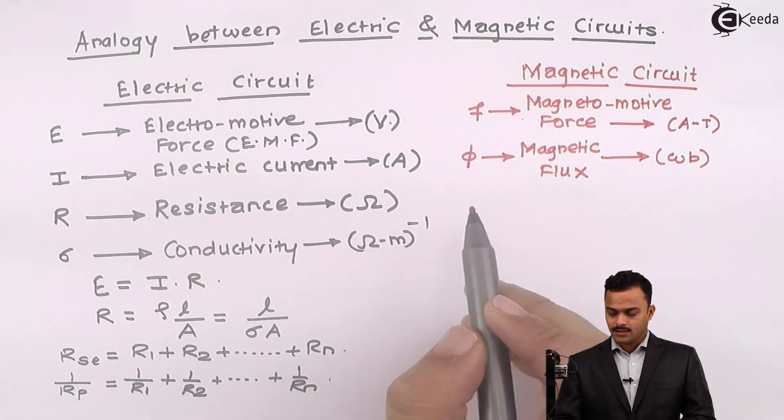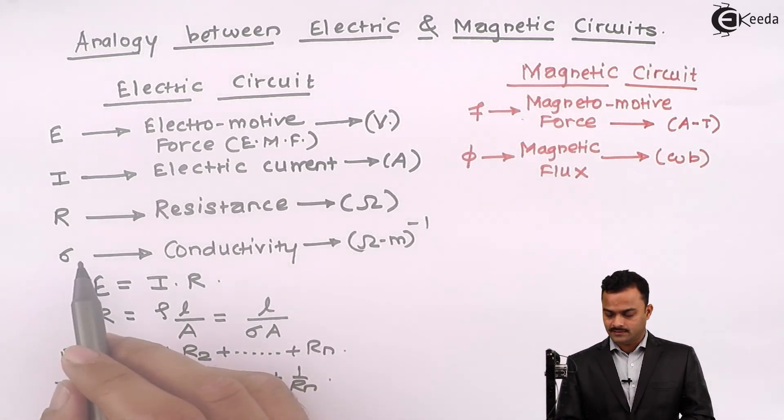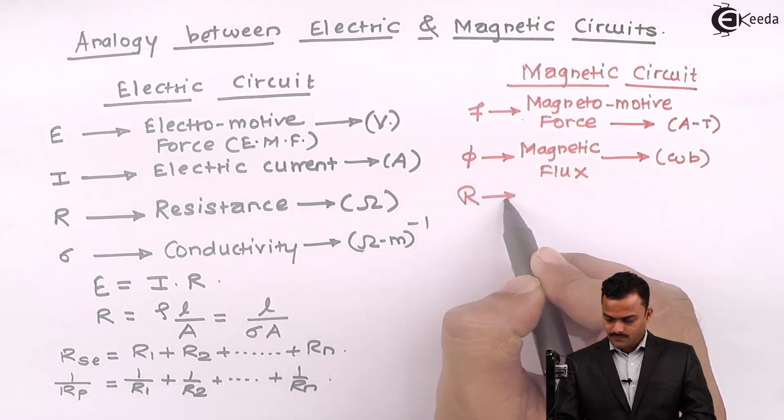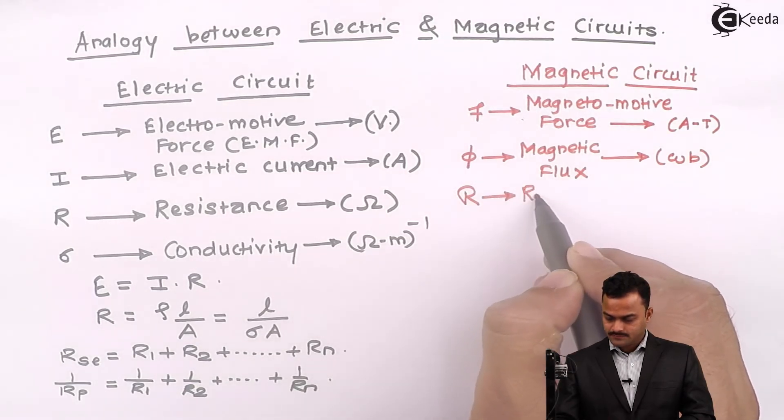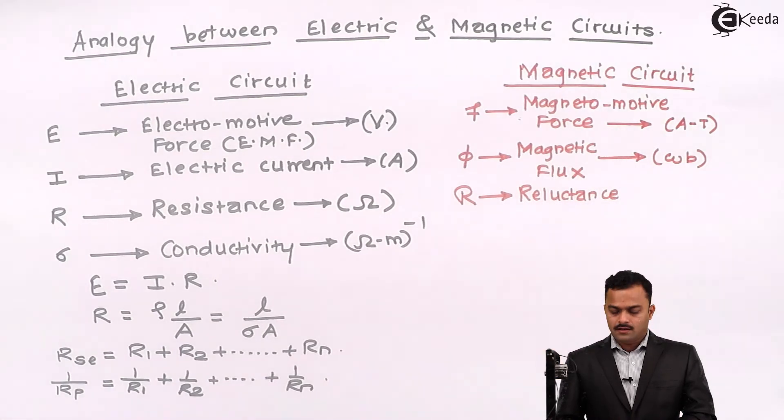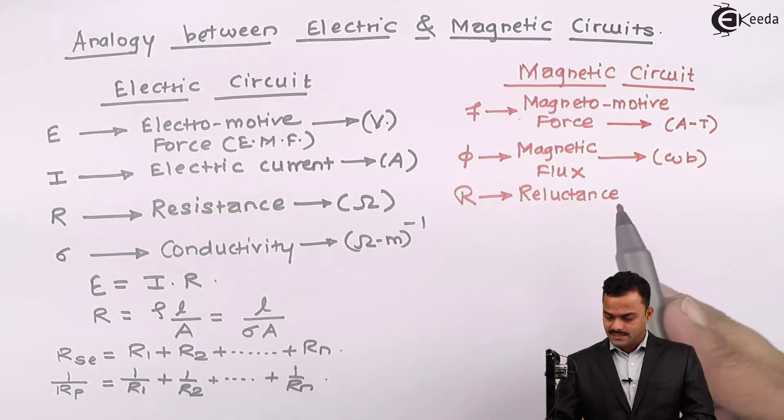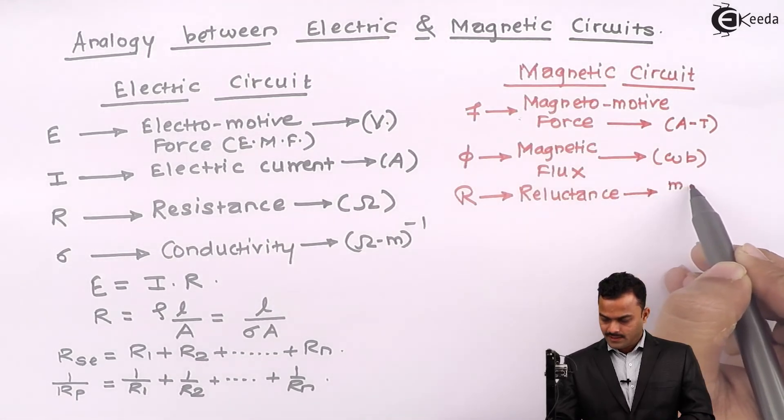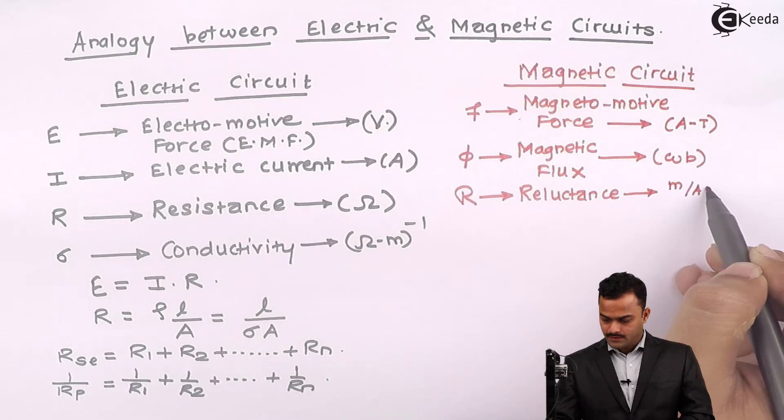Reluctance is analogous to resistance in magnetic circuit. So it is R which we call as a reluctance. And the unit of reluctance is meter per ampere turn.